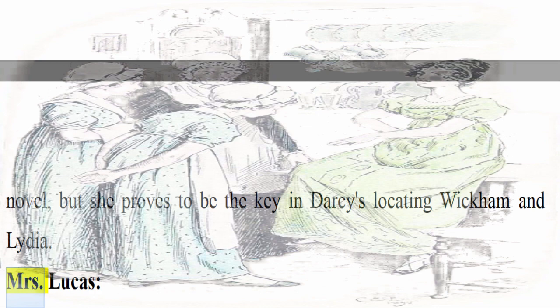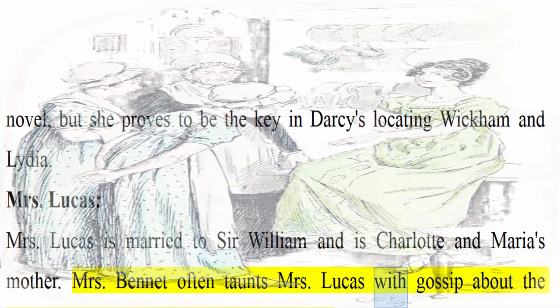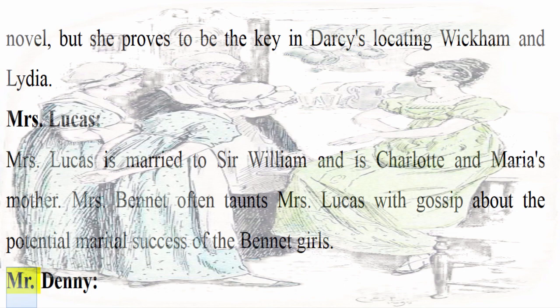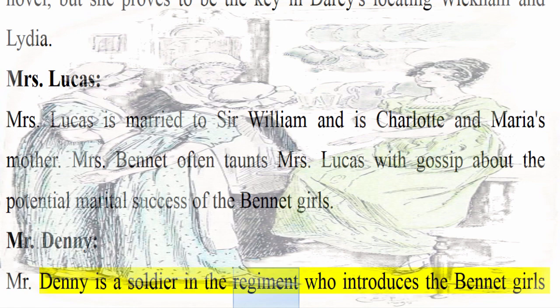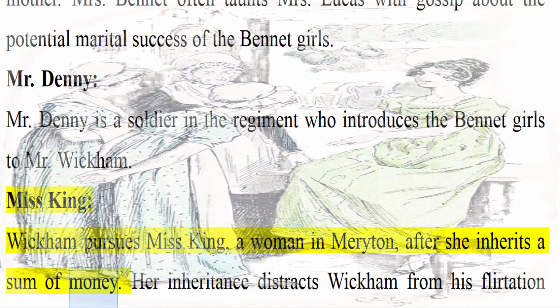Mrs. Lucas: Mrs. Lucas is married to Sir William and is Charlotte and Maria's mother. Mrs. Bennet often taunts Mrs. Lucas with gossip about the potential marital success of the Bennet girls. Mr. Denny: Mr. Denny is a soldier in the regiment who introduces the Bennet girls to Mr. Wickham. Miss King: Wickham pursues Miss King, a woman in Merriton, after she inherits a sum of money. Her inheritance distracts Wickham from his flirtation with Elizabeth.